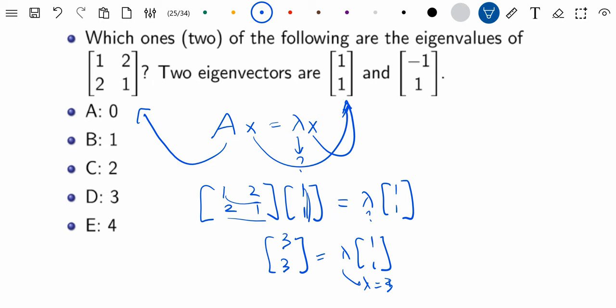And let's do it for the other one. 1, 2, 2, 1 times minus 1, 1 is lambda minus 1, 1. And this becomes minus 1.